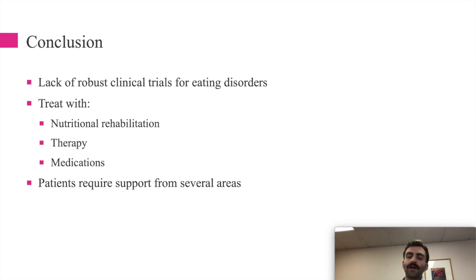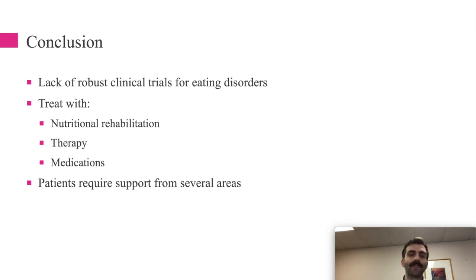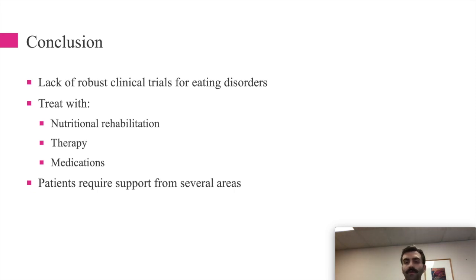In conclusion, the clinical trial evidence for eating disorders is not as robust as for depression or schizophrenia — studies are smaller and more spread out over time. Across all three disorders, remember that first-line treatment is nutritional rehabilitation and therapy, with medications chosen based on the specific disorder. These patients require support from multiple areas: therapists, physicians, psychiatrists, family, and dietitians or nutritionists — because just as the disease is multifactorial, recovery requires support in multiple dimensions.